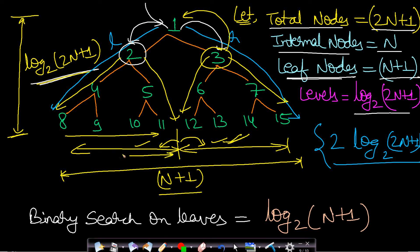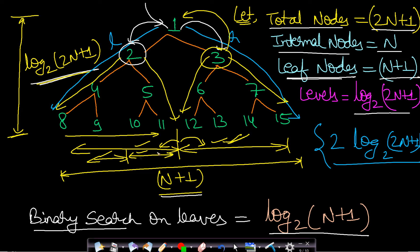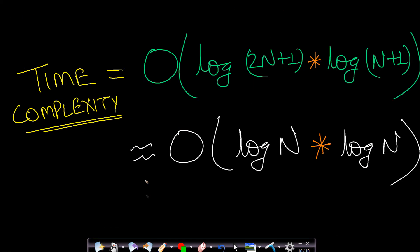We divide the problem into two sub-problems, one of which returns soon (either the left or the right). We then divide the remaining part again, similar to binary search. We make this binary search log₂(n + 1) times, and each check costs O(log n), giving a total time complexity of O(log₂(2n+1) × log(n+1)), which approximates to O(log n × log n) = O(log²n).